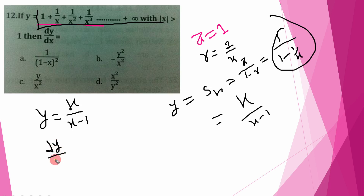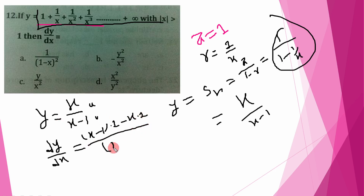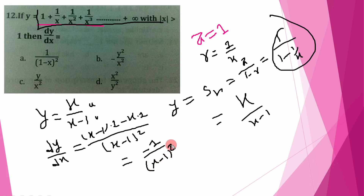Now dy by dx: apply the quotient rule. Using the quotient rule, let u equal x and v equal x minus 1. The derivative is v times derivative of u minus u times derivative of v, all divided by v squared, which is x minus 1 squared. That gives x minus 1 minus x, divided by x minus 1 squared, equal to minus 1 divided by x minus 1 squared. Exactly the answer — option confirmed.